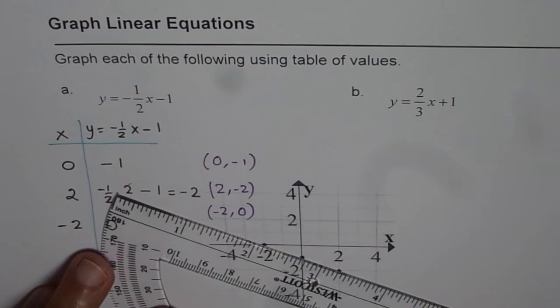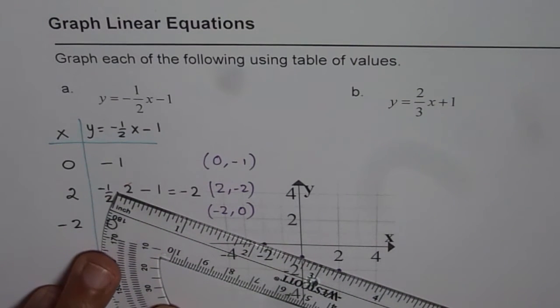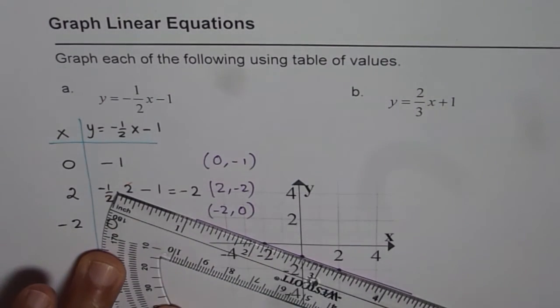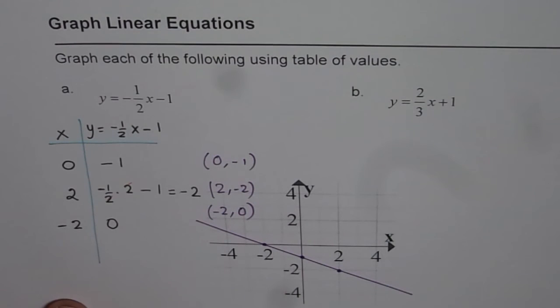Now, we can join these points and get a straight line to represent the given equation. So, that is how we can actually graph linear equation when given in fraction form using table of values.